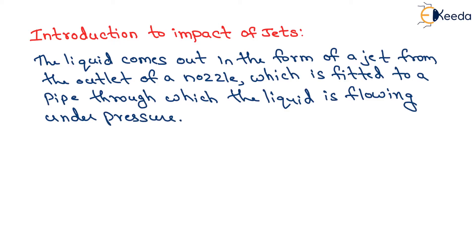So what do you mean by Introduction to Impact of Jets? The liquid comes out in the form of a jet from the outlet of a nozzle. If we fit a nozzle in a pipe, then the liquid which comes out from that nozzle with very high pressure is called the impact of jet.